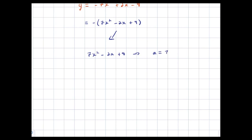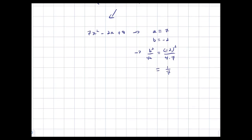So a = 7 and b = −2. Then b²/4a = (−2)²/(4 × 7) = 4/28 = 1/7. So my b²/4a is 1/7. I'm going to add and subtract 1/7, making this 7x² − 2x + 1/7 + 9 − 1/7. This is not going to be pretty — I'm going to have to deal with √7 and some common denominator work — but it's okay to get fractions and even irrational numbers.